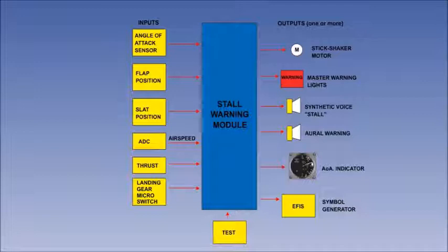The inputs for a stall warning are the angle of attack sensor vane, airspeed, thrust, and slat and flap positions. To prevent a stall warning from manifesting on the ground, a landing gear switch is also one of the inputs.